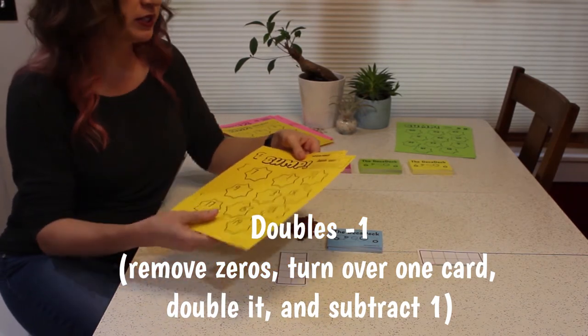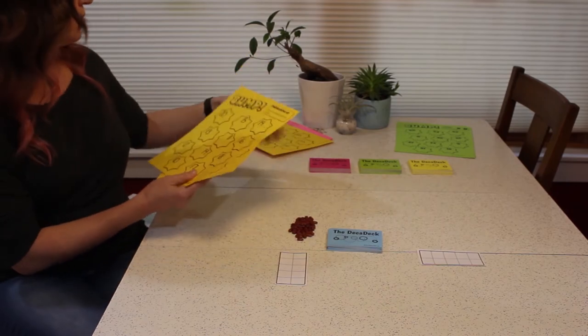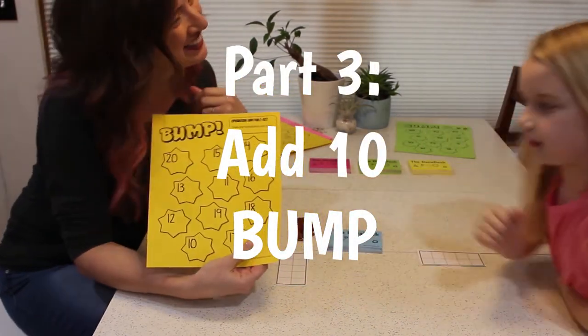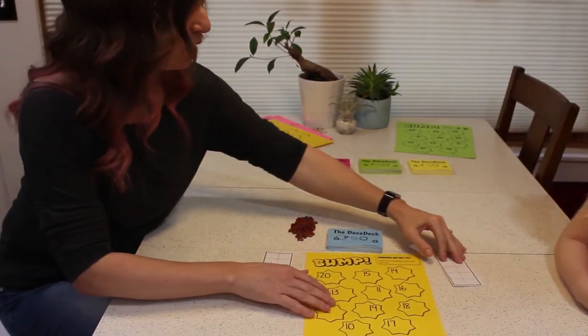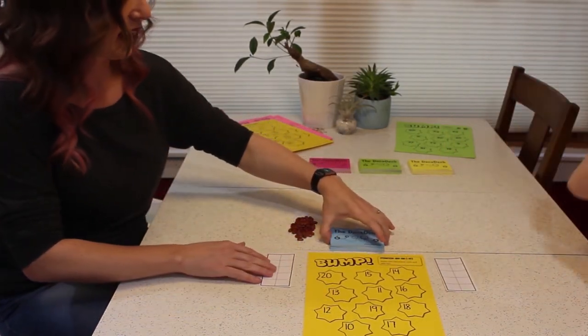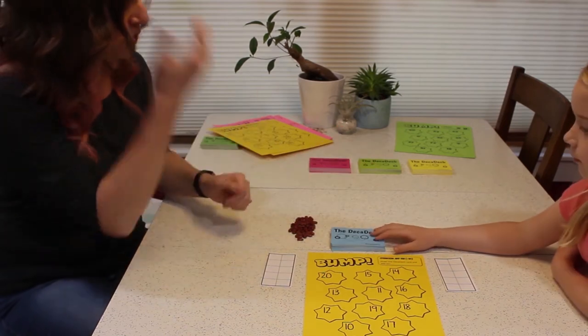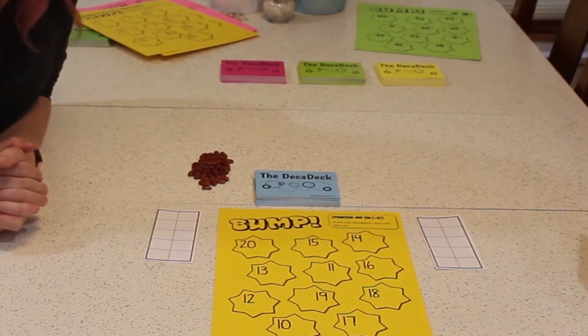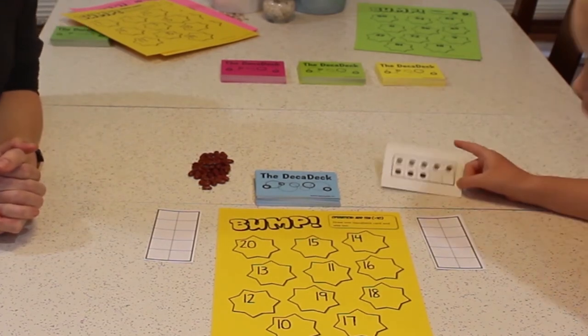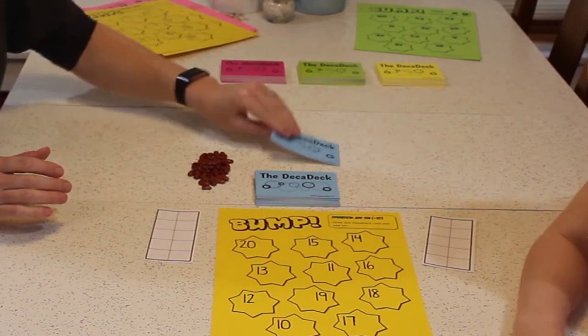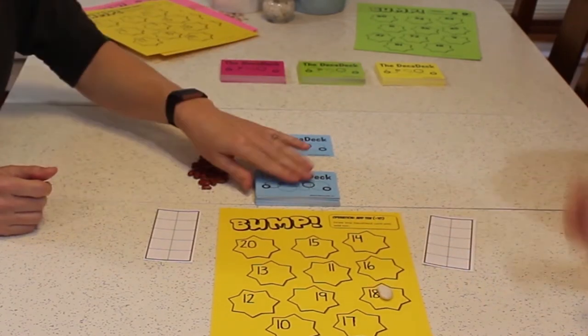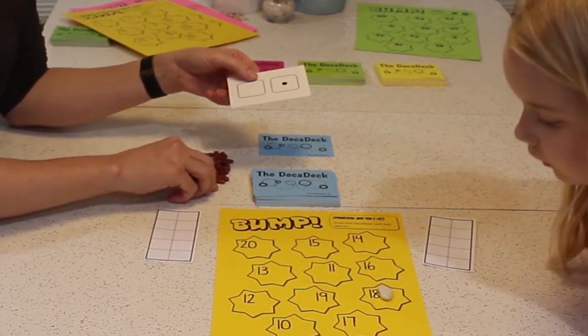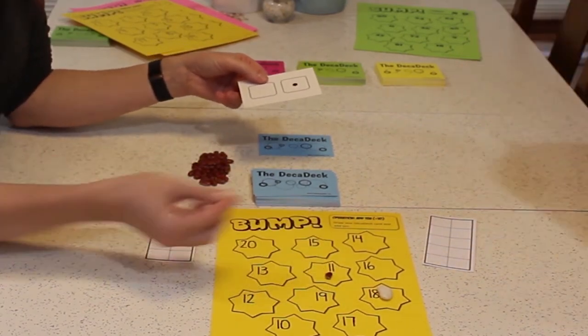So we're playing Add 10 Bump. Hi, Dorothy. Hi. And whatever card we turn over, we have to add 10 to. So you go ahead and start, Dorothy. I drew an 8. You got an 8? So, okay. 8 plus 10, that would be 18. 18. Good job. All right. I got a 1. And 1 plus 10 is 11. So I will put my marker there.